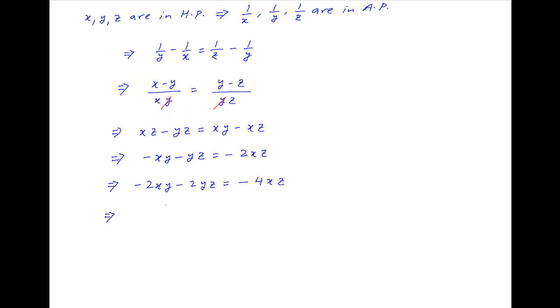Now add 2xz to both sides. We get 2xz - 2xy - 2yz = -2xz.